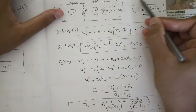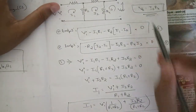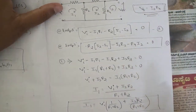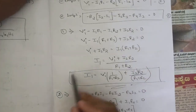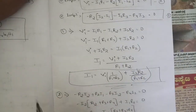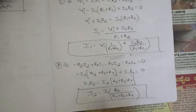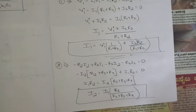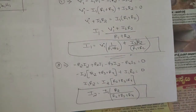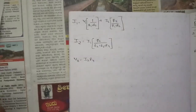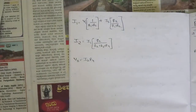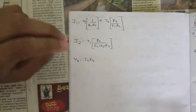So now we have three equations: V_out = I2·R4; I1 = Vi·[1/(R1+R2)] + I2·[R2/(R1+R2)]; and I2 = I1·[R2/(R2+R3+R4)]. Now let's see how to write the block diagram for these three equations.